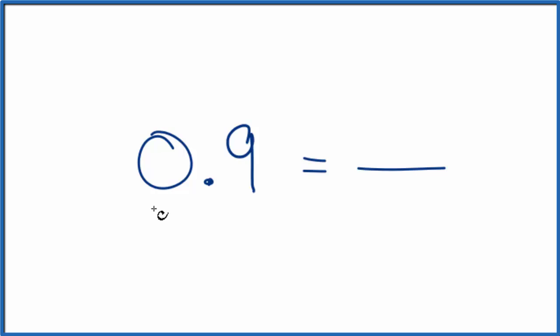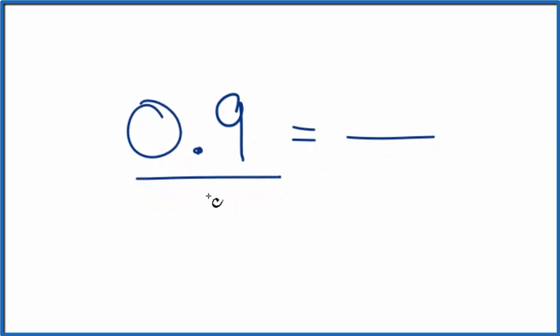The first thing we could do is we can consider 0.9 to be 0.9 over 1. We're dividing by 1, so we really haven't changed anything, but we're starting to get that fraction form there.